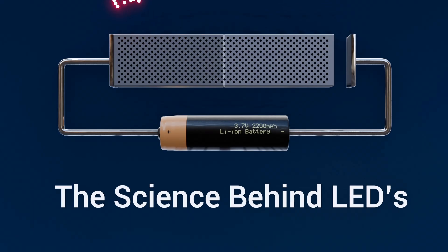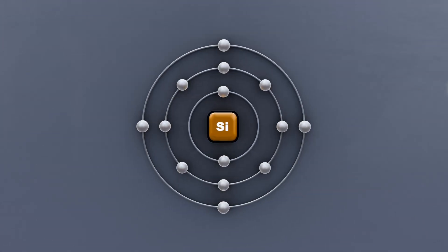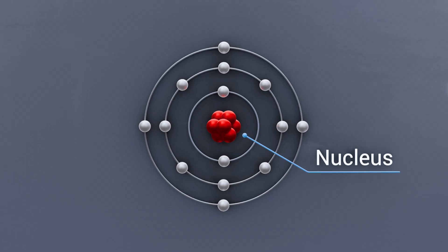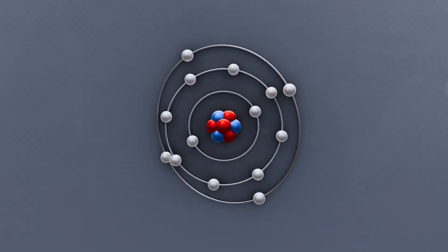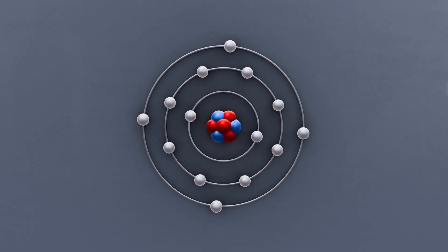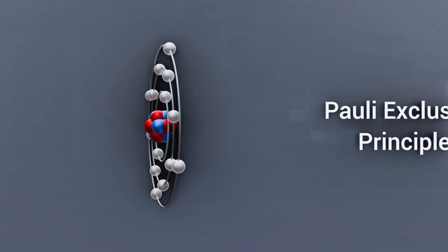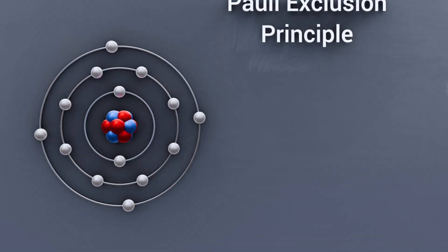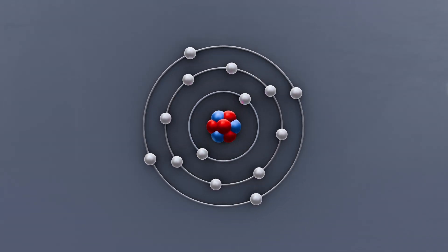The science behind LEDs. To understand how exactly a photon is emitted from the semiconductor within an LED, let's first take a look at an atom and its makeup. We have your standard nucleus containing protons and neutrons, surrounded by shells containing electrons. Each shell can only contain a certain amount of electrons. This is due to something known as the Pauli exclusion principle. And each electron has to have a certain amount of energy to be accepted into the shell.